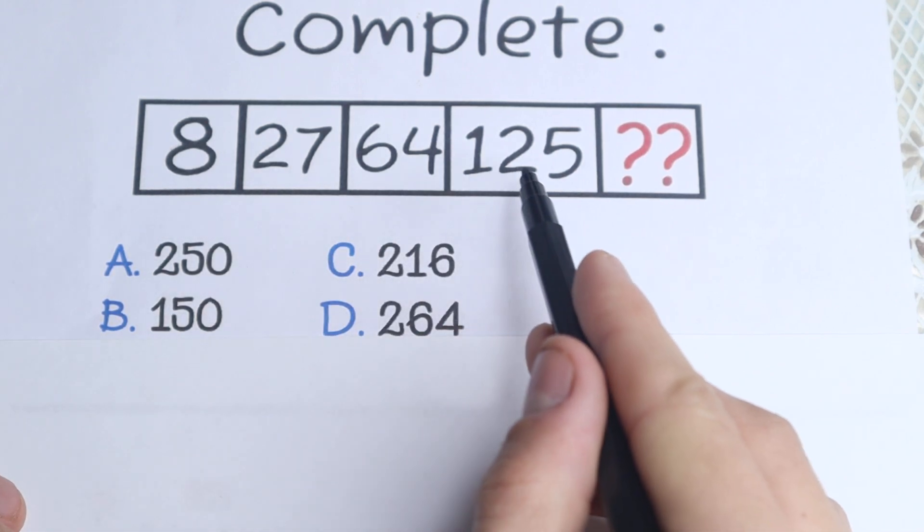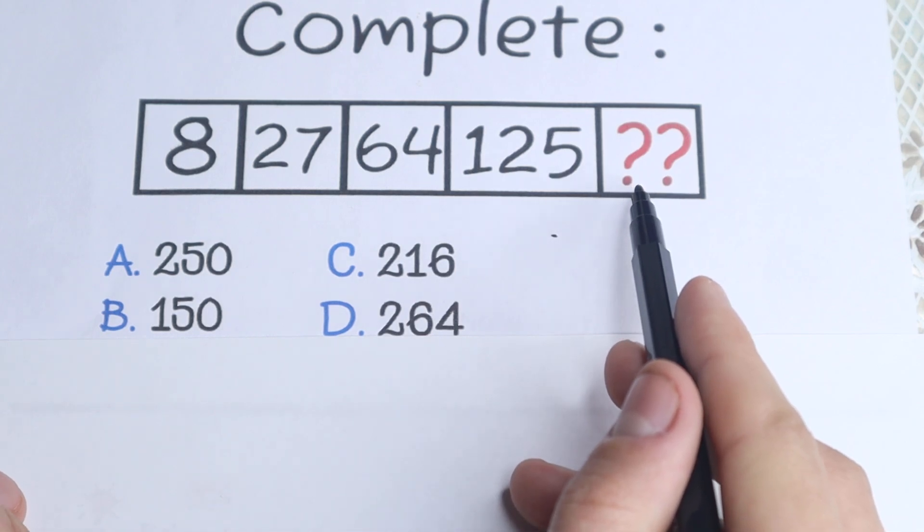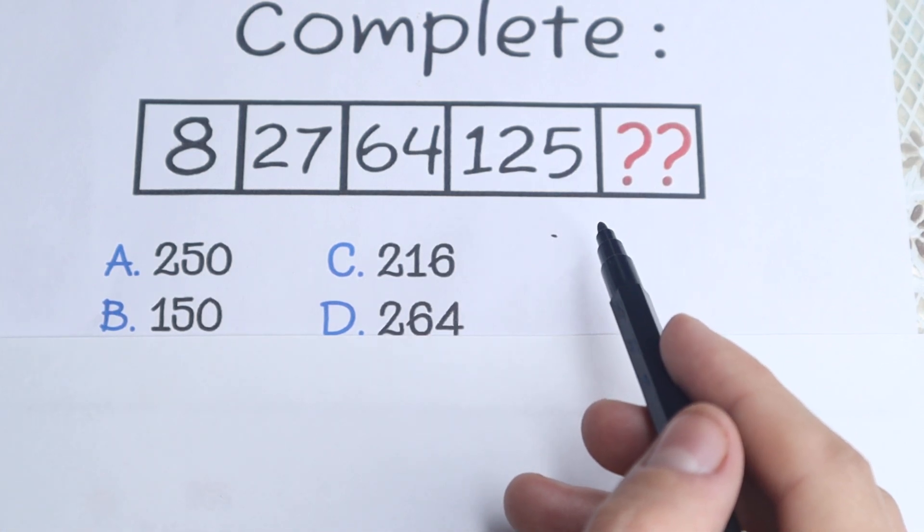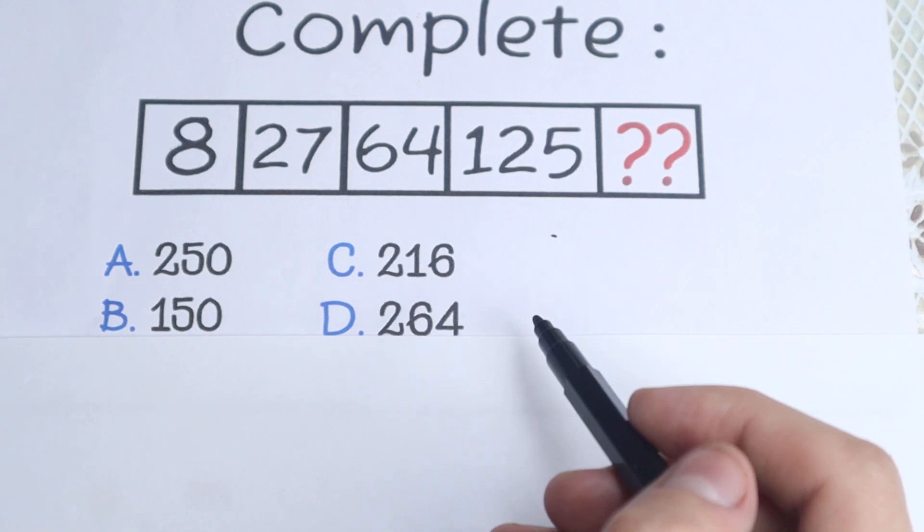We have 8, 27, 64, 125 and we need to find the last number in this numeric series. Right here we have options A, B, C and D.